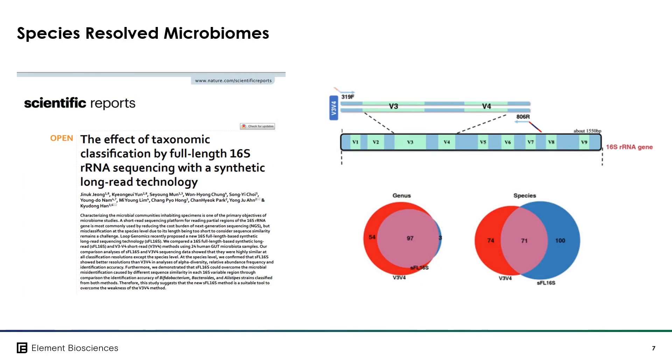In this 2021 publication, a different customer compared short and long read sequences of different microbiome samples. In this example, they evaluated the V3-V4 600 base pair amplicon with short read technology and full length 1500 V1 through V9 region of the 16S gene for the same samples using long read technology. They observed that more variation and resolution at the species level is obtainable when looking at the full length sequence molecule rather than the partial molecule.